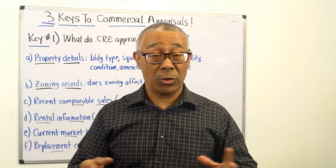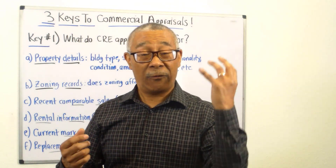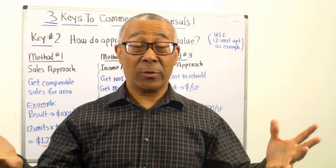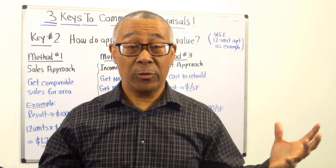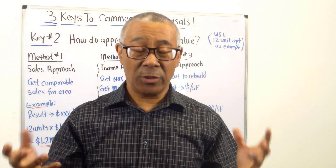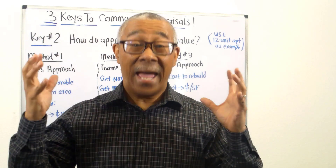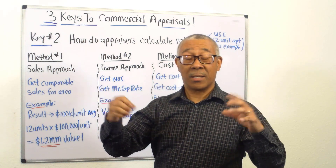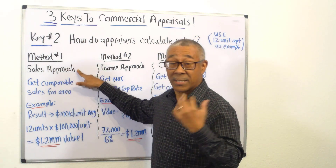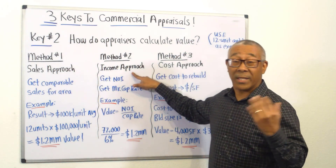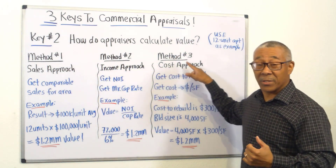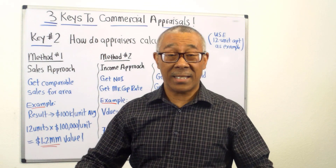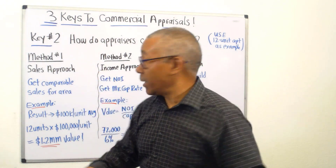Key number two: how do appraisers value commercial real estate? I'm going to use a 12-unit apartment building as an example. There are three methods appraisers use. Method number one is called the sales approach. Method number two is called the income approach. Method number three is called the cost approach. I'll go over each with a quick example.